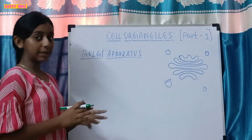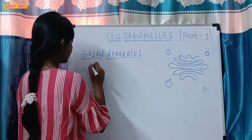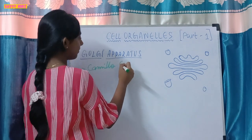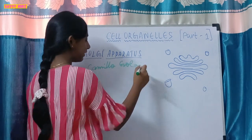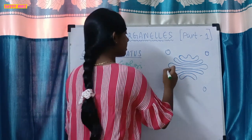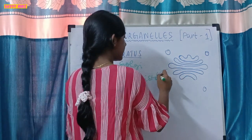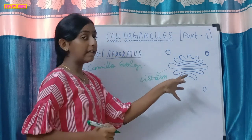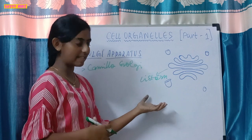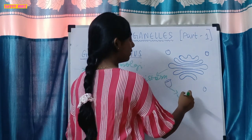The second cell organelle we will learn is the Golgi apparatus. This Golgi apparatus was found by Camillo Golgi. It is a system of cisterns — flattened sac-like structures arranged parallel to each other. The bag-like structures associated with it are called vesicles.